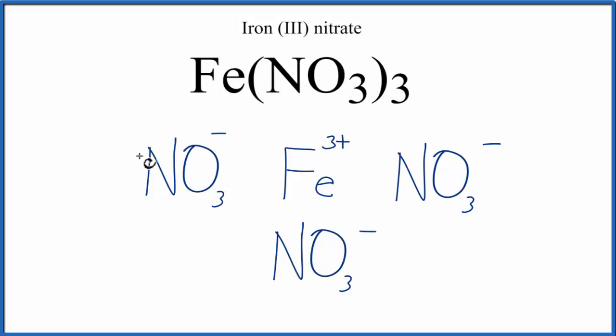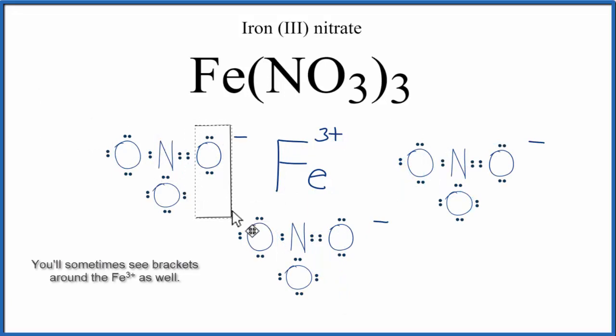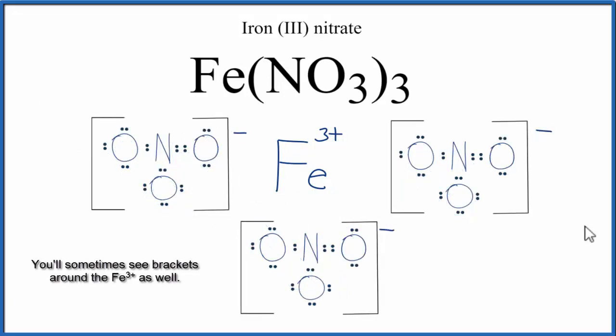Next let's replace the NO₃ minus, the nitrate ion, with a Lewis structure. Then we'll put brackets around each of the nitrate ions, and that makes this the Lewis structure for Fe(NO₃)₃, iron(III) nitrate.